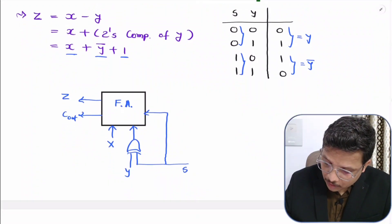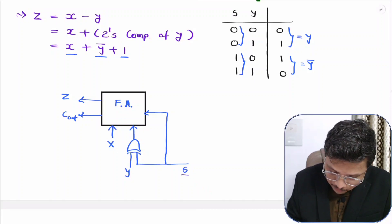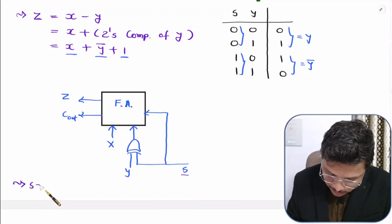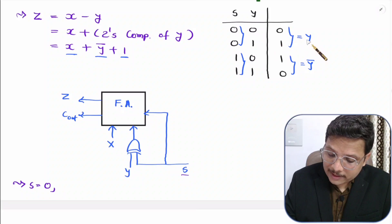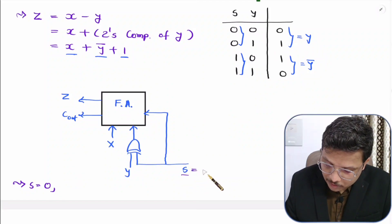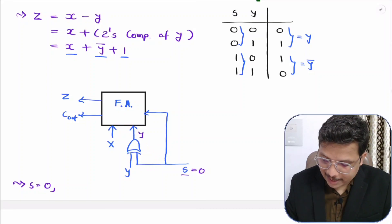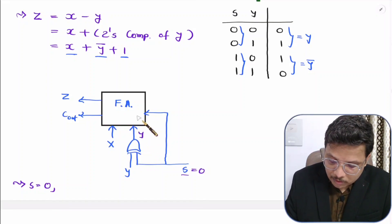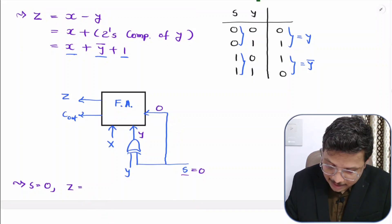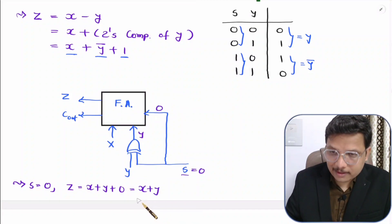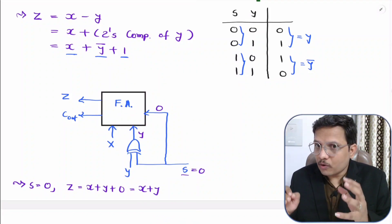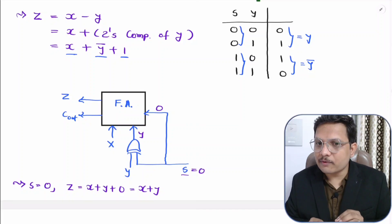When S equals 0: the XOR gate output is Y, and the carry-in is 0. So Z equals X plus Y plus 0, which is simply X plus Y. The circuit is functioning as a full adder.